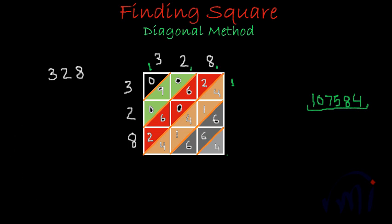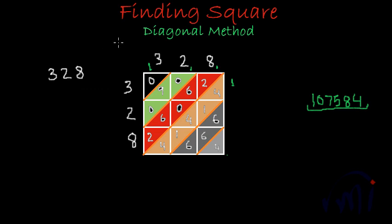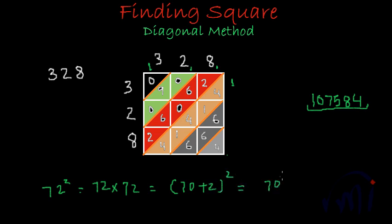Let's check using a calculator: three hundred and twenty-eight multiplied by three hundred and twenty-eight gives us one hundred and seven thousand five hundred and eighty-four — exactly the result we got using this method. The logic behind this method uses the formula of (a + b) whole square for the two-digit case, which expands to a² + 2ab + b². For the three-digit case it uses (a + b + c) whole square. Think about it and derive it on your own — it is going to be a fun activity!